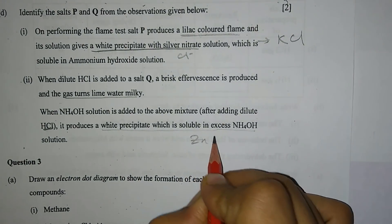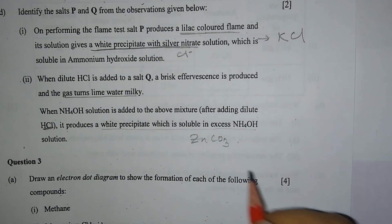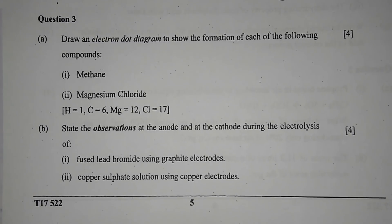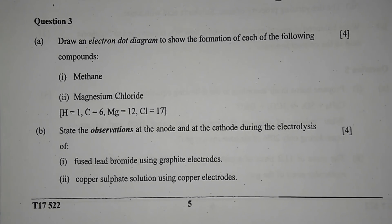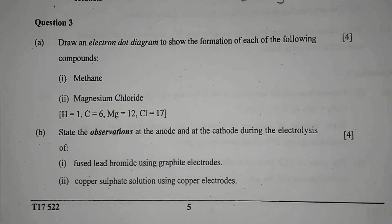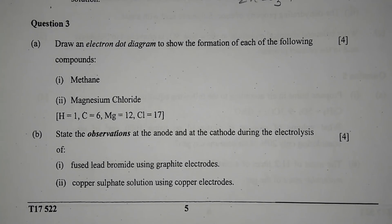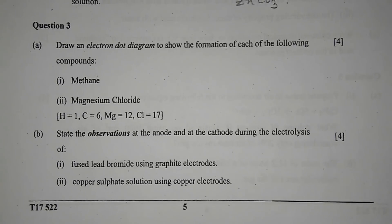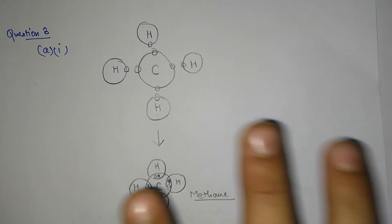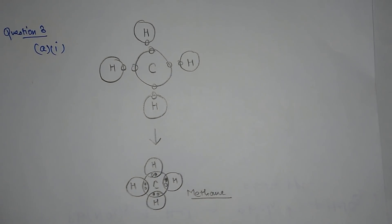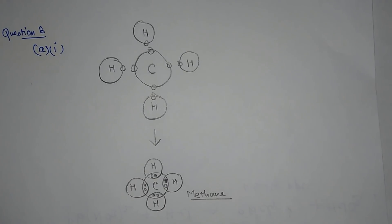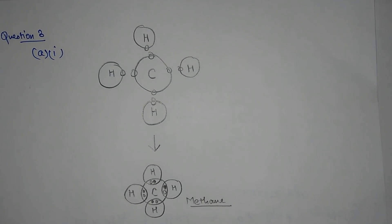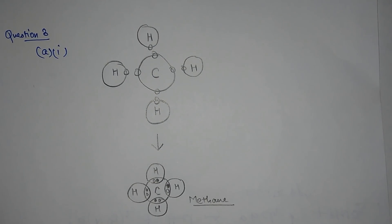Question 3a: draw an electron dot diagram to show the formation of each of the following compounds. Number 1 — methane. Number 2 — magnesium chloride. For methane, carbon shares its 4 outermost electrons with 4 hydrogen atoms, each having 1 electron, to form methane.